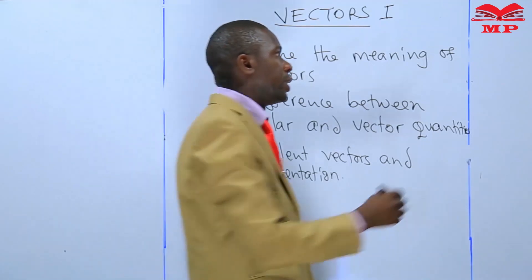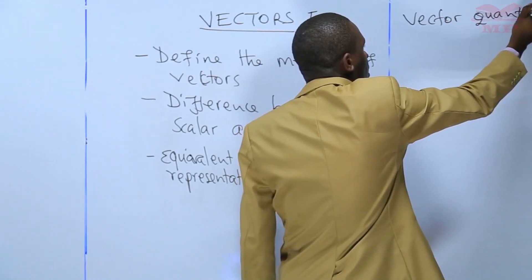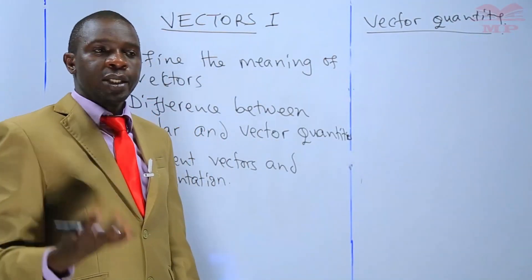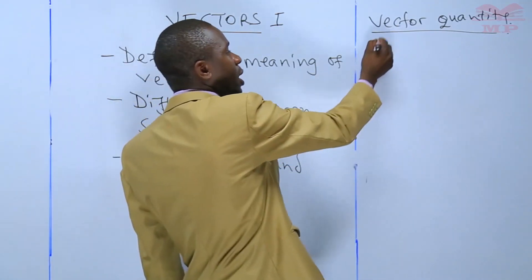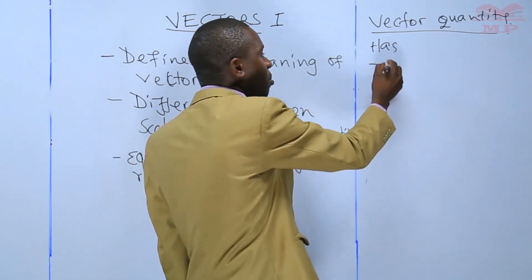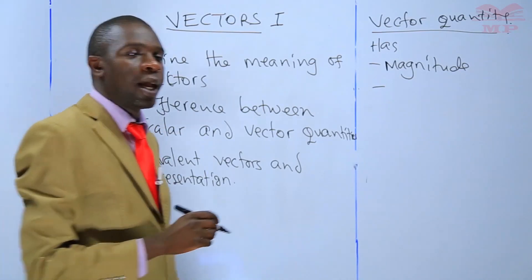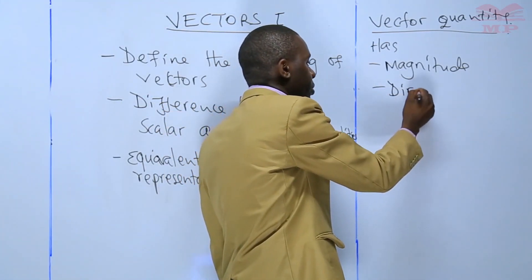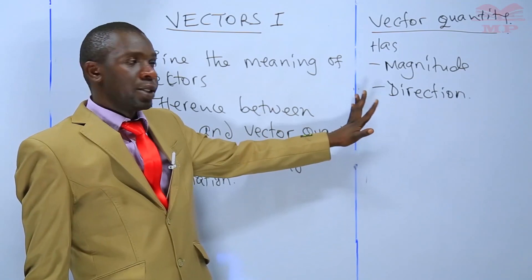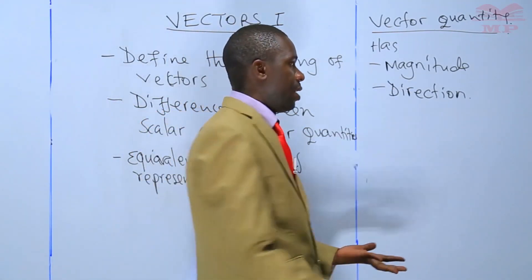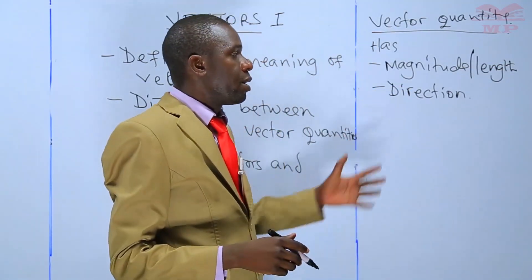When you talk of a vector quantity, a vector quantity is called so because it has to possess two characteristics. A vector quantity has, one, magnitude, and two, direction. Now, some may be asking what magnitude is — magnitude normally refers to length. Magnitude refers to length; it can also be size.